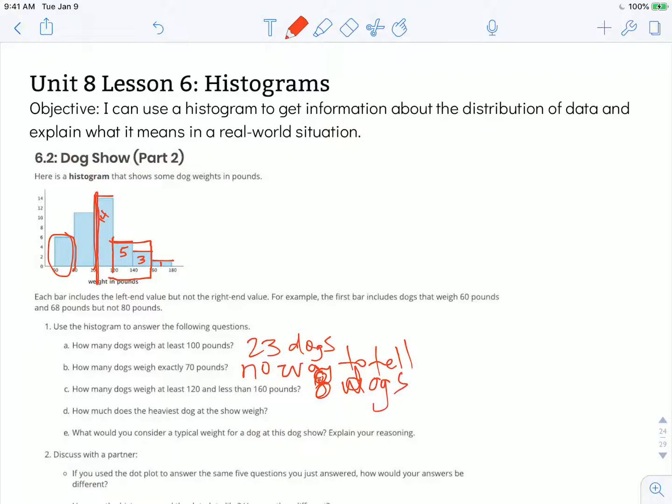Letter D, how much does the heaviest dog at the show weigh? Again this represents a bin, so that dog could weigh somewhere in between 160 and not quite 180 pounds. So it could be a 179 pound dog or it could be 160 pounds. We don't know for sure so we just know that it's at least 160 pounds but less than 180 pounds. So somewhere in that range.